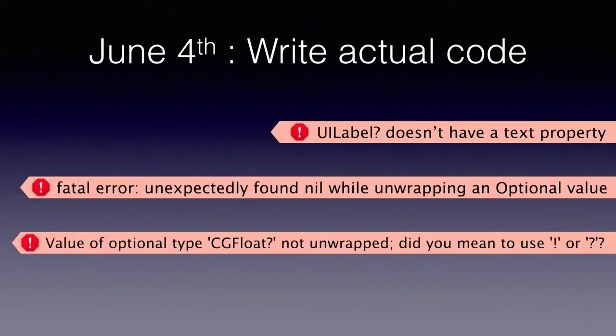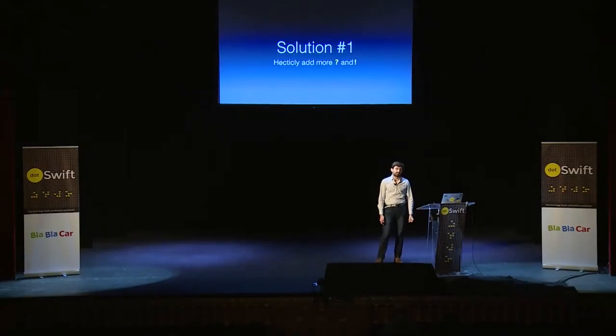Then comes the actual time when you start writing code in Xcode, and you see Xcode errors. It's cool because they're Swift Xcode errors, but they're still errors. Things like 'UILabel doesn't have a text property' — what? Fatal error unwrapping an optional value — what does that mean? Did you mean question mark or exclamation mark? So probably the first thing you did was just adding more question marks and exclamation marks until the compiler shuts up.